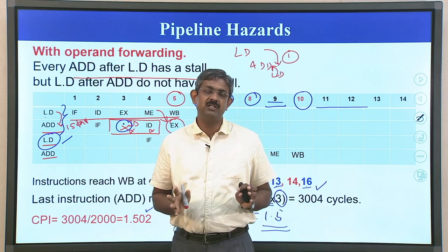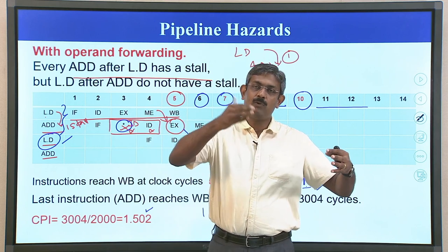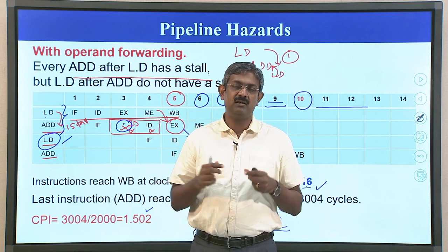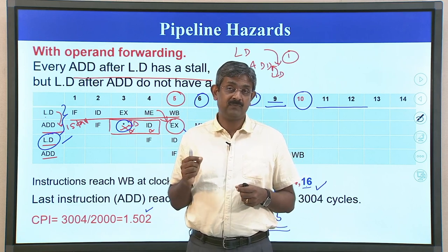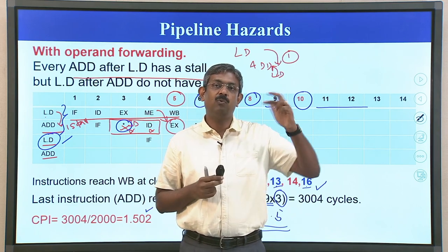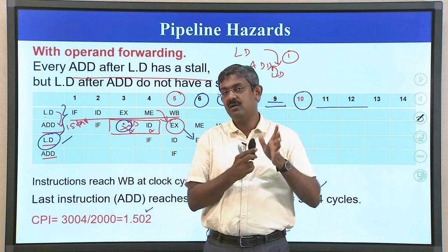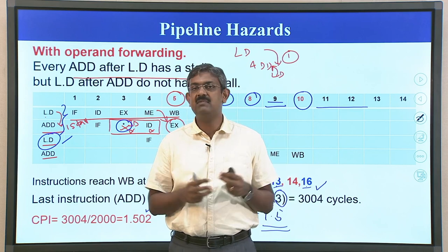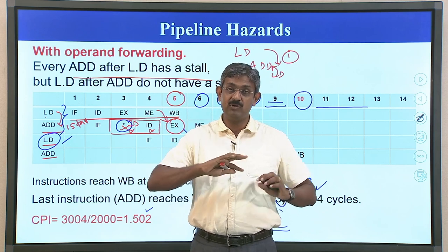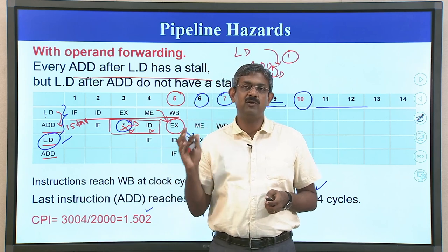With operand forwarding, we examined the dependency pattern between load and add instructions. Without operand forwarding, every instruction incurs 3 stall cycles. With operand forwarding, only between the load-add pair there is a stall; between the add-load pair there is no stall at all, giving an average of 0.5 stalls per instruction and a CPI of approximately 1.5.